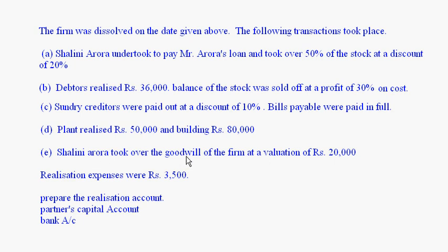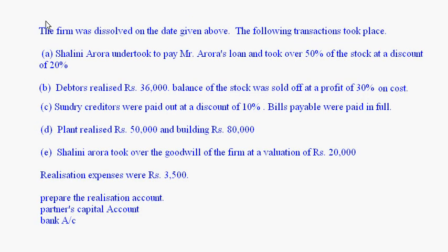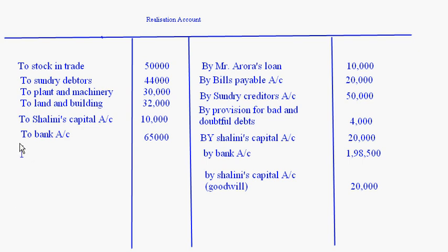Shalini Aroda took over the goodwill of the firm. Since goodwill is not appearing in the balance sheet it will not be transferred, but it was estimated and realized at rupees 20,000. Since Shalini Aroda is taking over the goodwill, this comes on the credit side — by Shalini's capital account, rupees 20,000. Finally, realization expenses were rupees 3,500, which comes on the debit side as to bank account, rupees 3,500.